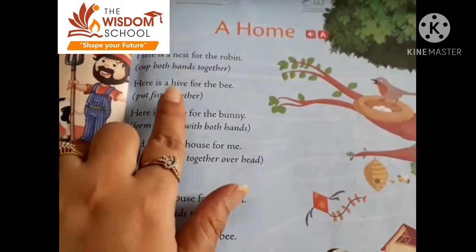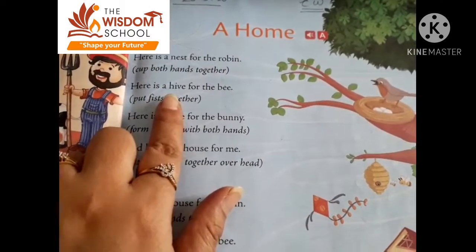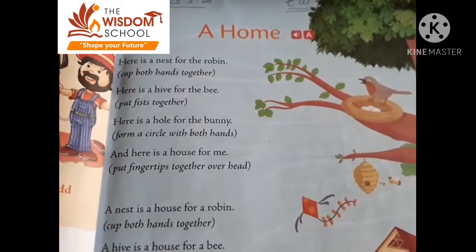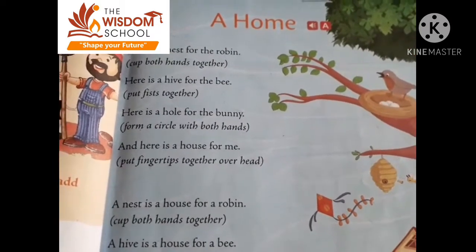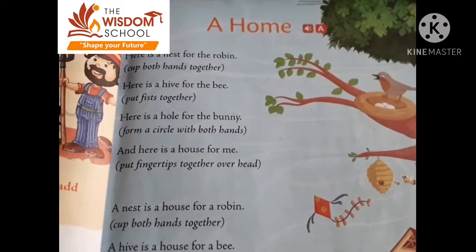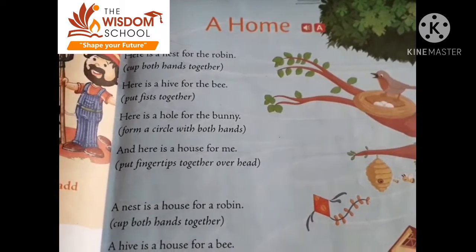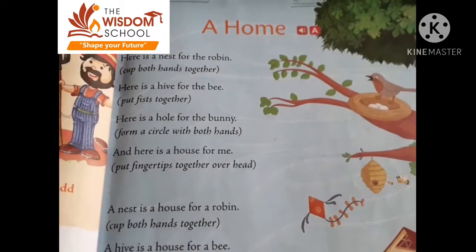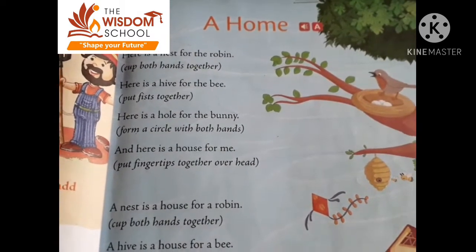Here is a nest for the robin. Here is a nest — kis ke liye hai? Robin ke liye. Cup both hands together. Aapne both hands ko cup ki shape do. And this becomes the nest for the robin.